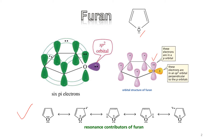We can see the resonance contributors of furan. When the lone pair electron on oxygen in the P orbital shares its electron with the adjacent carbon, the pi electron moves to that carbon, forming a new bond between oxygen and carbon. Oxygen becomes positive and this carbon becomes negative. That negative carbon then shares its excess electron with the next carbon, shifting the pi electron.